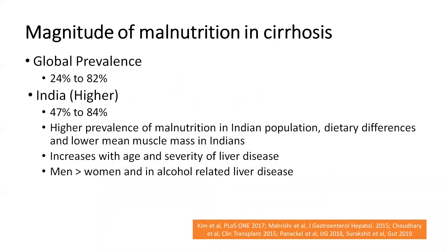After understanding the basic concepts of malnutrition, frailty, and sarcopenia, let us look at the magnitude of malnutrition in cirrhosis. According to various studies, the global prevalence of malnutrition ranges from 24 to 82 percent in patients with cirrhosis, depending on whether the patient is decompensated or compensated cirrhotic.